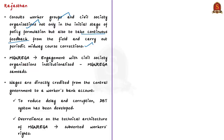In the case of MGNREGA, they also engage with civil society organizations and have institutionalized this process. One more important thing is these meetings, that is the MGNREGA Samvats, are even attended by the Chief Minister of Rajasthan. This shows the kind of importance that they are giving to this scheme. Currently, MGNREGA wages are directly credited from the central government to a worker's bank account.